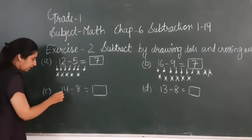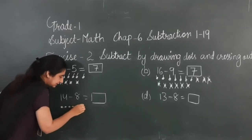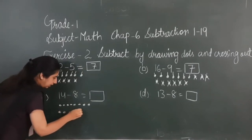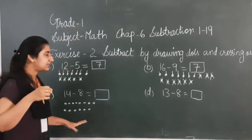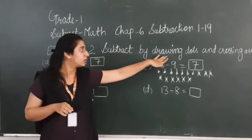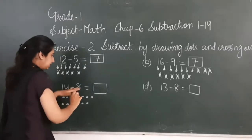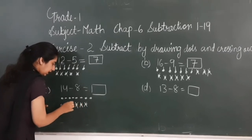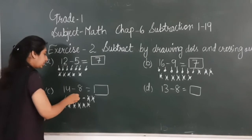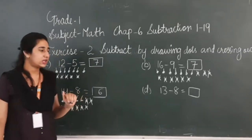14. I will draw here 14 dots: 1, 2, 3, 4, 5, 6, 7, 8, 9, 10, 11, 12, 13 and 14. You can draw even lines if you don't have enough space in your textbook, but in your notebook you have to compulsorily draw dots, as in the heading it is mentioned to draw dots. Here I have drawn 14 dots. Among these 14, I will cross out 8: 1, 2, 3, 4, 5, 6, 7 and 8. So how many are left? 1, 2, 3, 4, 5, 6. After subtracting 8 from 14, 6 are left.